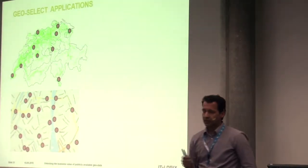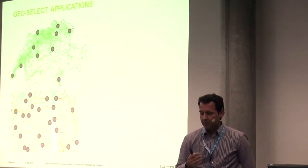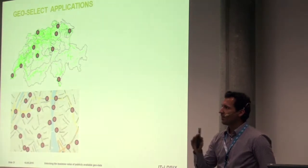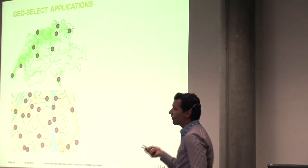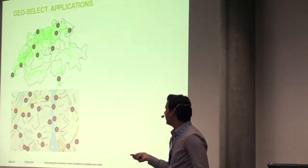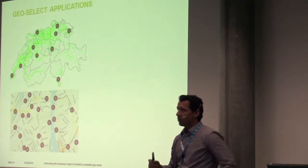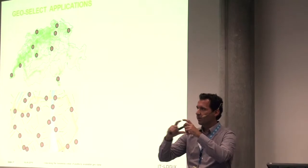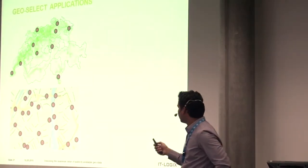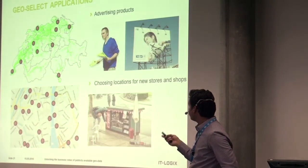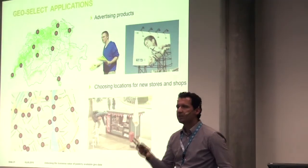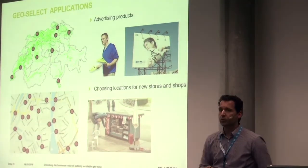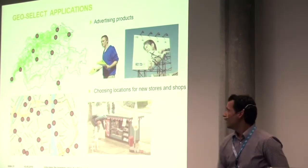Now that we have this data, we can do region selection either at the national level or at the city level, because we also have information at the level of 100 meter by 100 meter blocks. This can be very useful for applications involving advertising, choosing locations for new stores, and similar tasks.